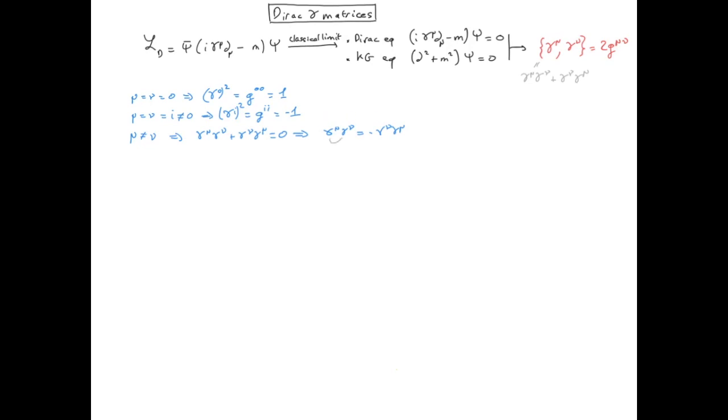Indeed, we see that if we swap gamma mu and gamma nu, then we acquire a minus sign. And this property cannot be fulfilled by numbers but can be by matrices.